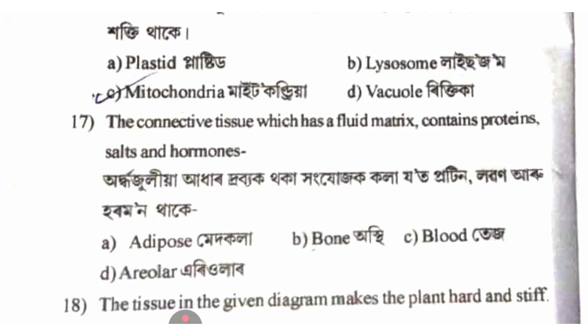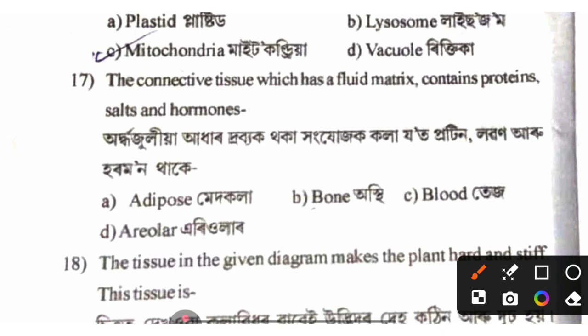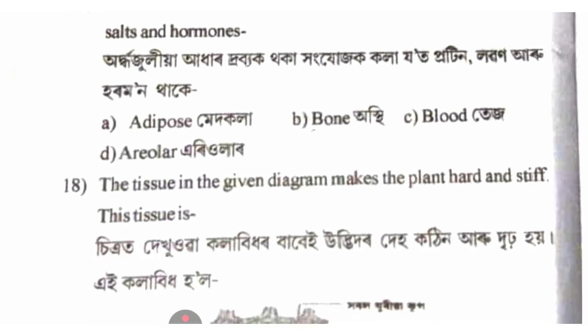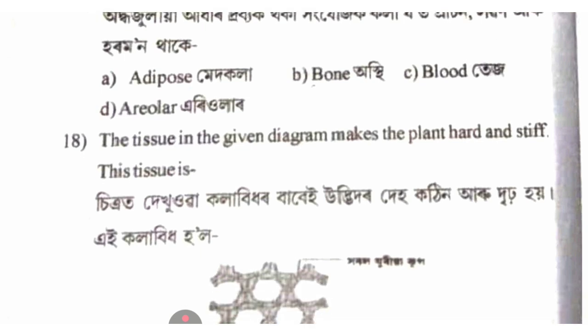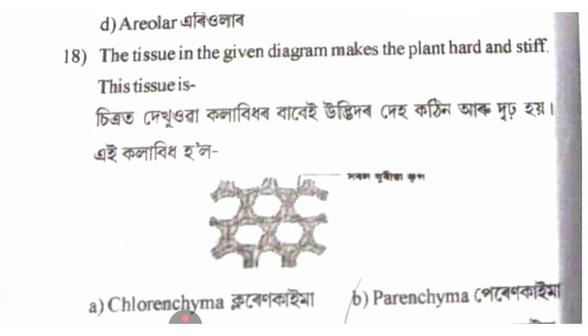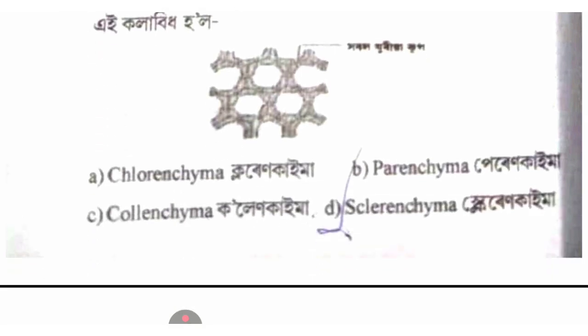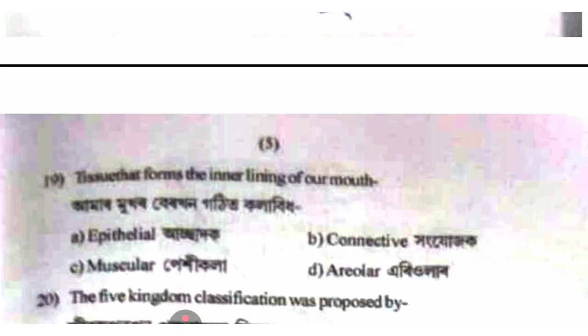The tissue in the given diagram that makes the plant hard and stiff — this tissue is collenchyma. The answer is option D.